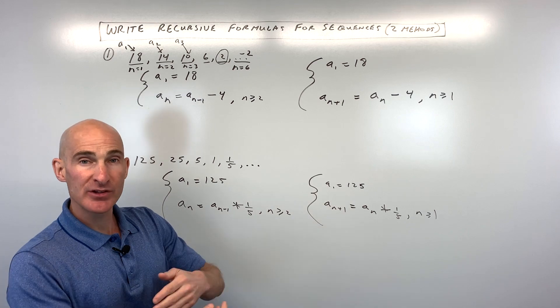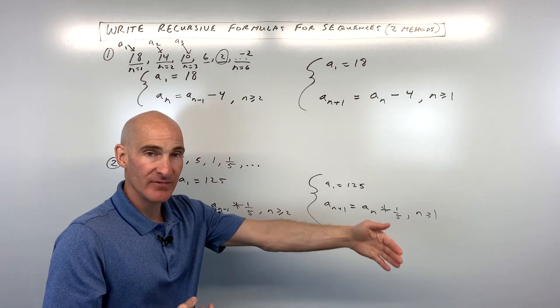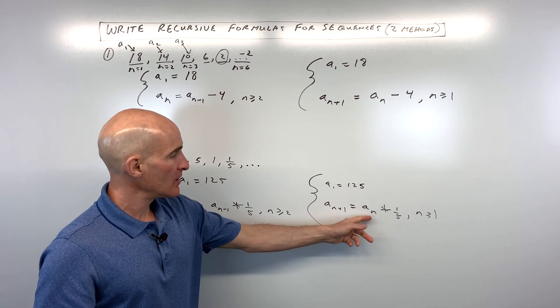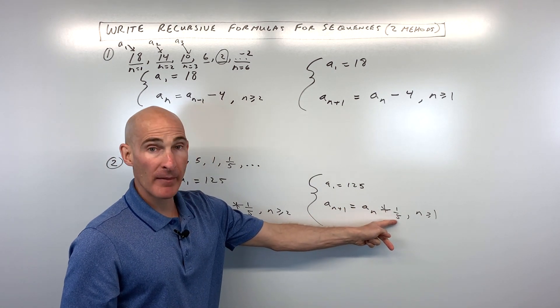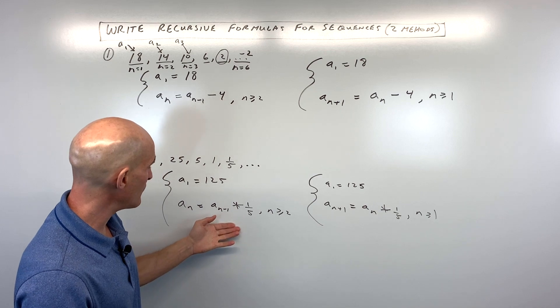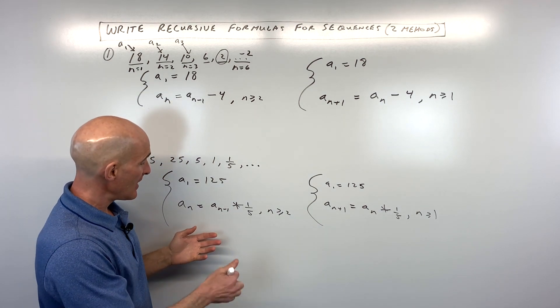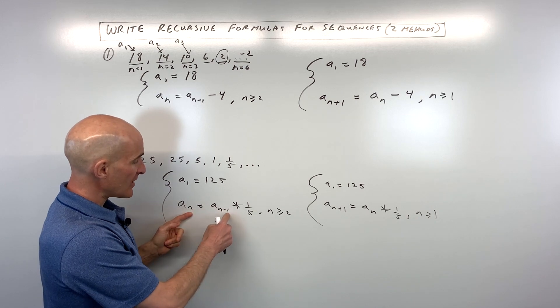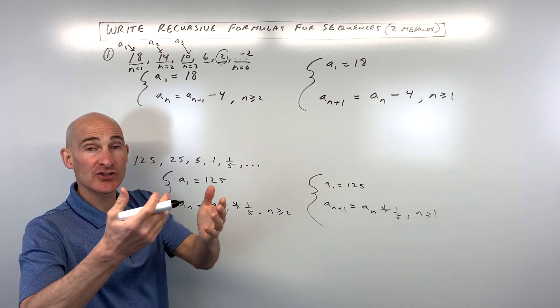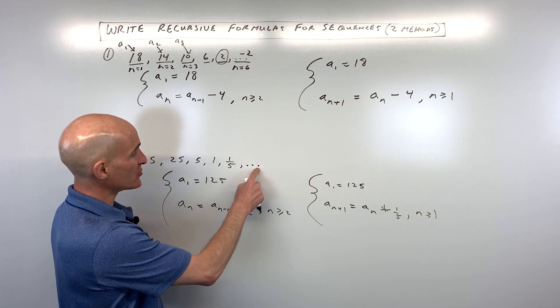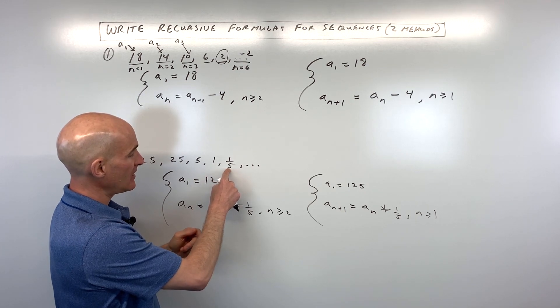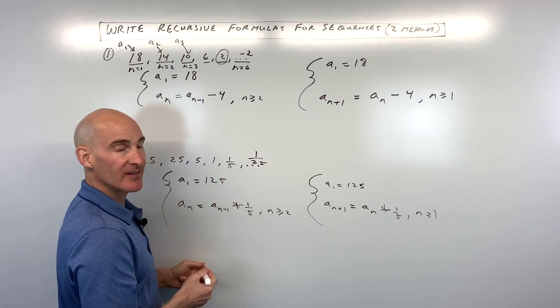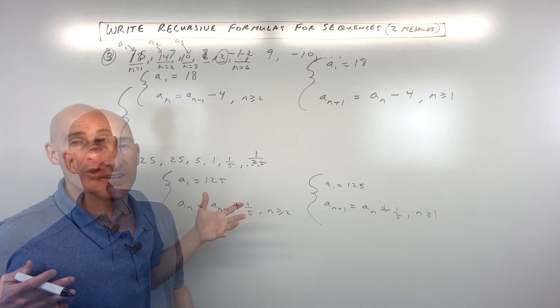The other option is a sub 1 equals 125, and then a sub n plus 1 equals a sub n times 1 fifth. And this would be when n is greater than or equal to 1. So either way, you can either think of n plus 1, that's like one term beyond the nth term, like one term additional. You just take the value of the term that you're on, that nth term, and you multiply by 1 fifth. That's one way. This way is what I learned originally, and so I kind of stuck with it a little bit more. I just like to think of whenever I see n minus 1, I think about, oh, I just go back one term. So if I wanted to find this term here, I just go back one term, and I multiply by one fifth, and that's going to make this 125th. And you can keep repeating that pattern.